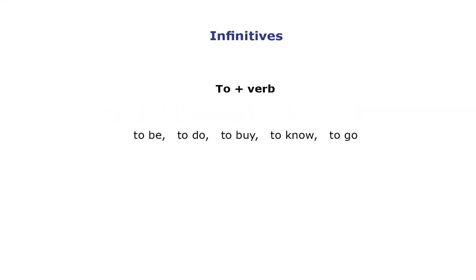Hello and welcome to this tutorial about infinitives from AboutYourEnglish.com. An infinitive is 'to' plus the base form of a verb. Here are some examples of infinitives: to be, to do, to buy, to know, and to go.